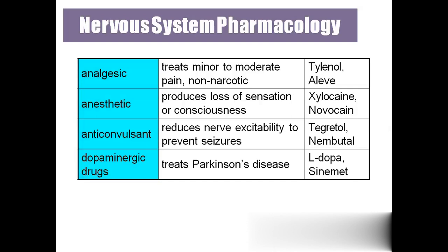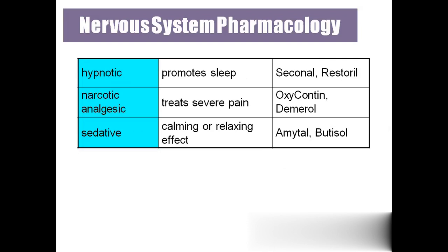Coming to pharmacology: 'Analgesics' treat minor or moderate pain and are non-narcotic. 'Anesthetics' cause loss of sensation or consciousness — all sensations will be lost. 'Anticonvulsants' treat all types of seizures — focal seizure, grand mal, petit mal. 'Dopaminergic drugs' treat Parkinson's disease. 'Hypnotics' promote sleep. 'Narcotic analgesics' are for severe pain. 'Sedatives' provide a calming or relaxing effect.